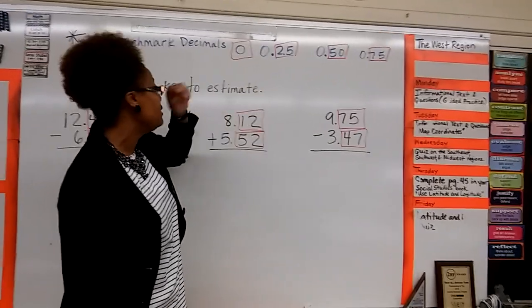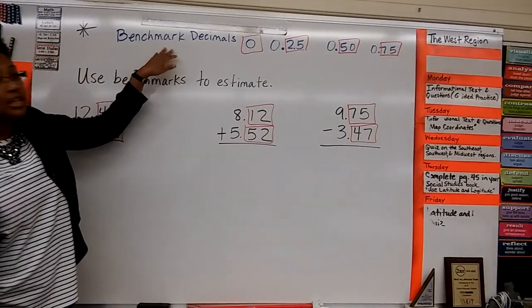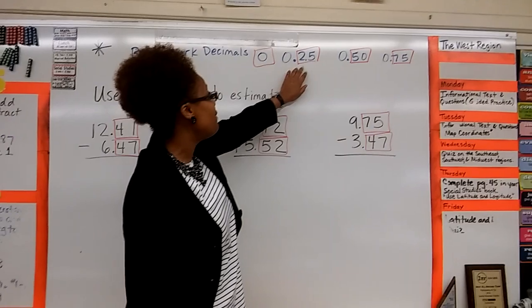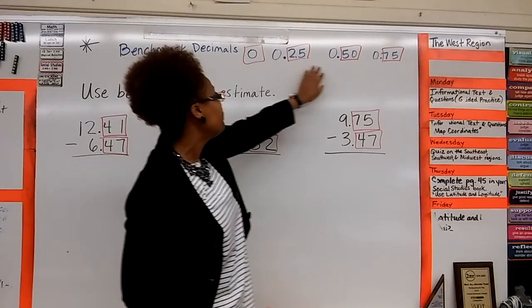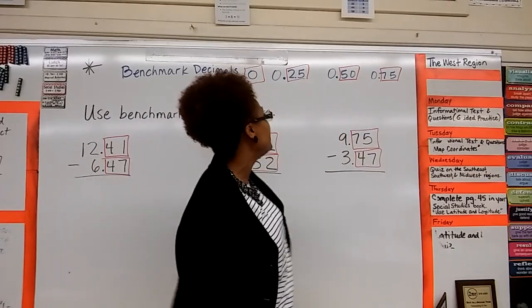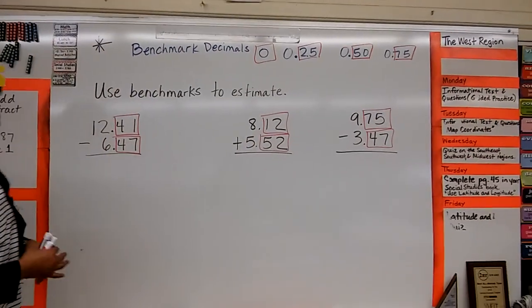Because all numbers start with 0. To help you relate and remember benchmark decimals, you can relate it to money. 25 hundredths, relate it to 25 cents, 50 hundredths, you can relate it to 50 cents, and 75 hundredths, you can relate it to 75 cents if you relate it to money.